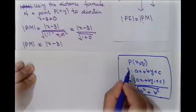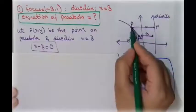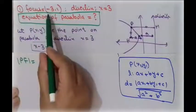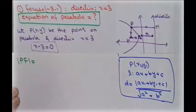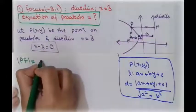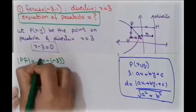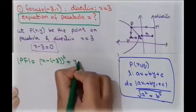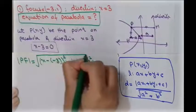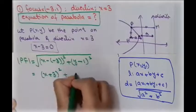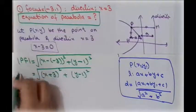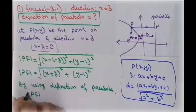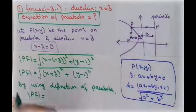Now we find the distance PF. Here is our focus point and here is point P, so applying the distance formula between two points: PF = √((x − (−3))² + (y − 1)²) = √((x + 3)² + (y − 1)²). By the definition of a parabola, PF = PM.